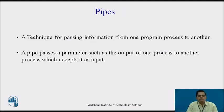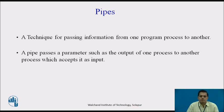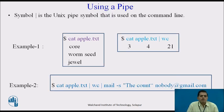A very important command in the Unix operating system is the pipe. The technique of pipe is passing information from one program process to another. A pipe passes a parameter such as the output of one process to another process which accepts it as input. When we want to connect the output of one process to the input of another process, we use the pipe technique, which is very important for the file system in Unix. The vertical bar symbol is the Unix pipe symbol used on the command line.